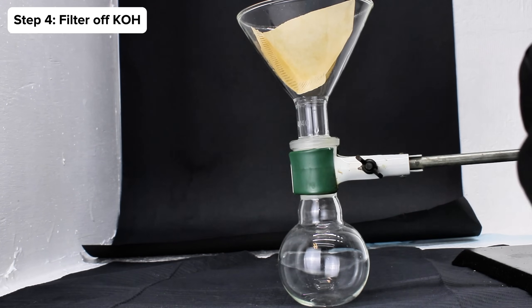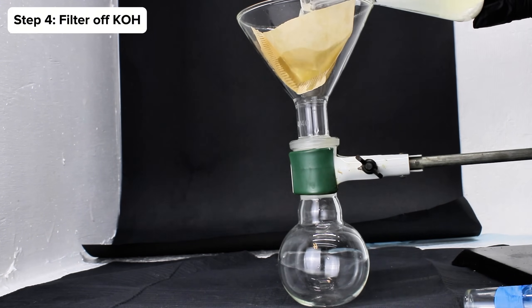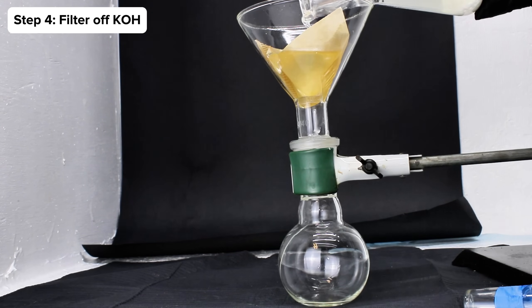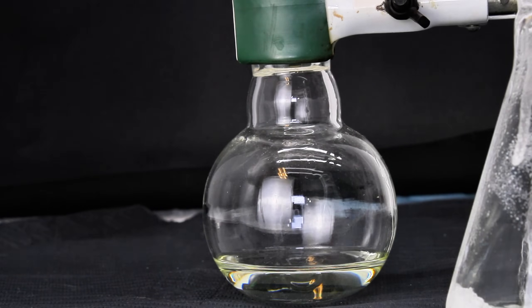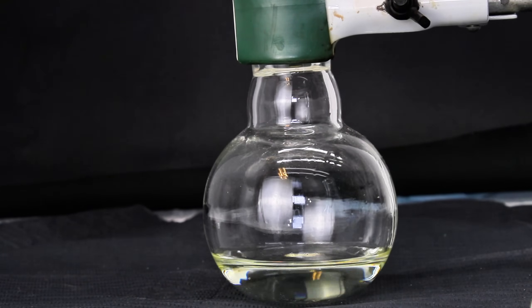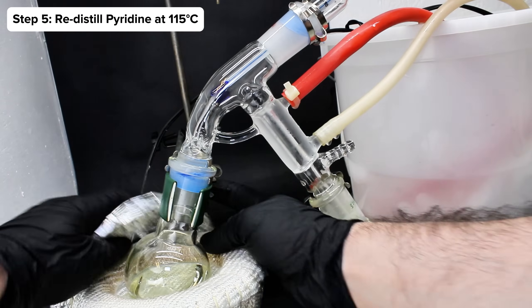When I came back the next day, I filtered the crude and now very dry pyridine through a coffee filter to remove the solid potassium hydroxide. The receiving flask here was a small boiling flask, which I immediately set up for a short path distillation to re-distill the very impure pyridine.